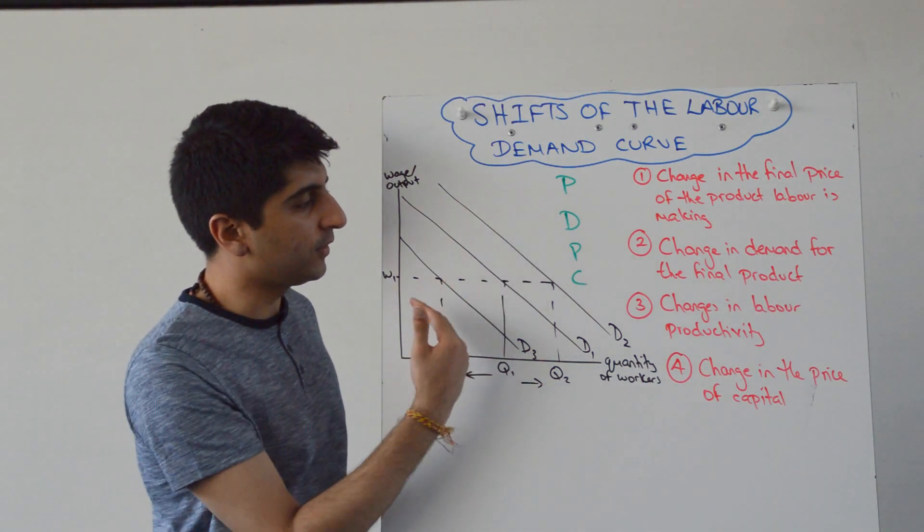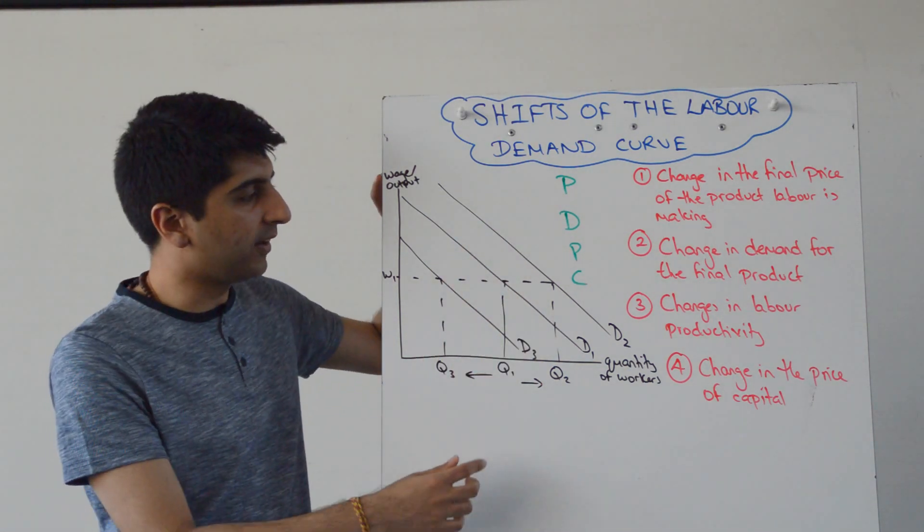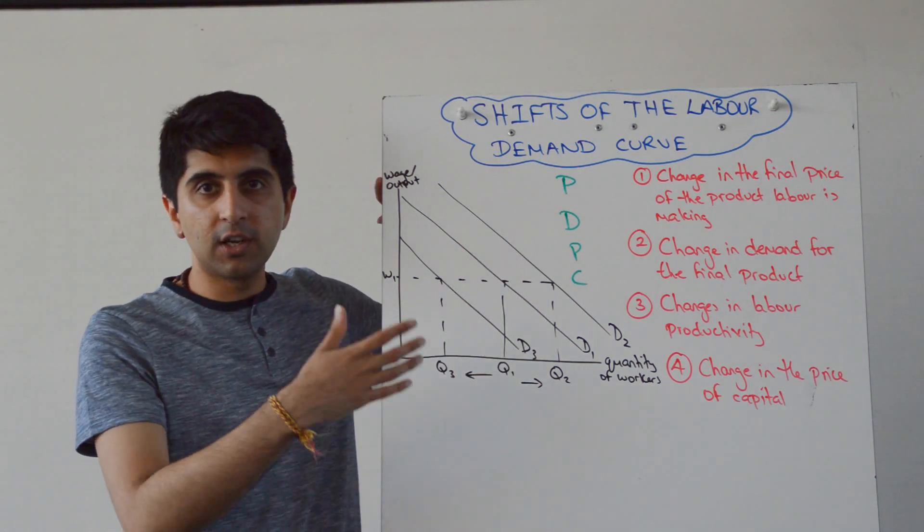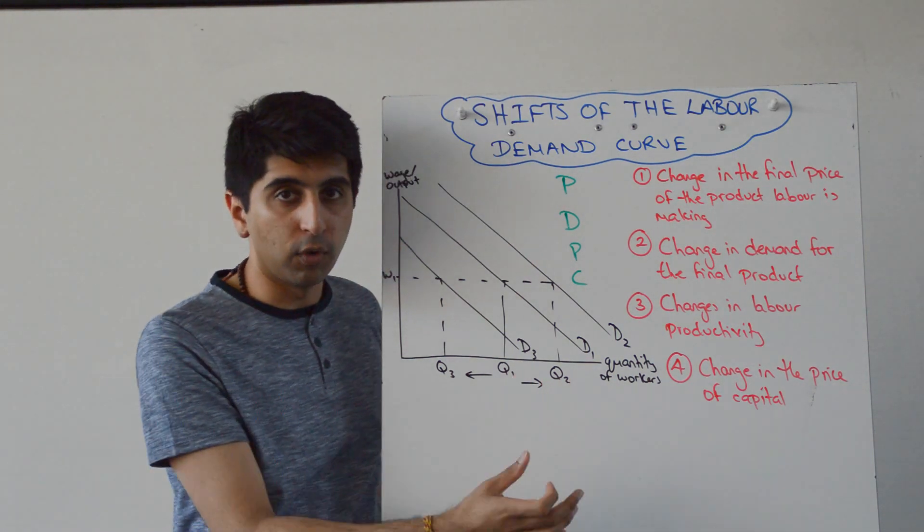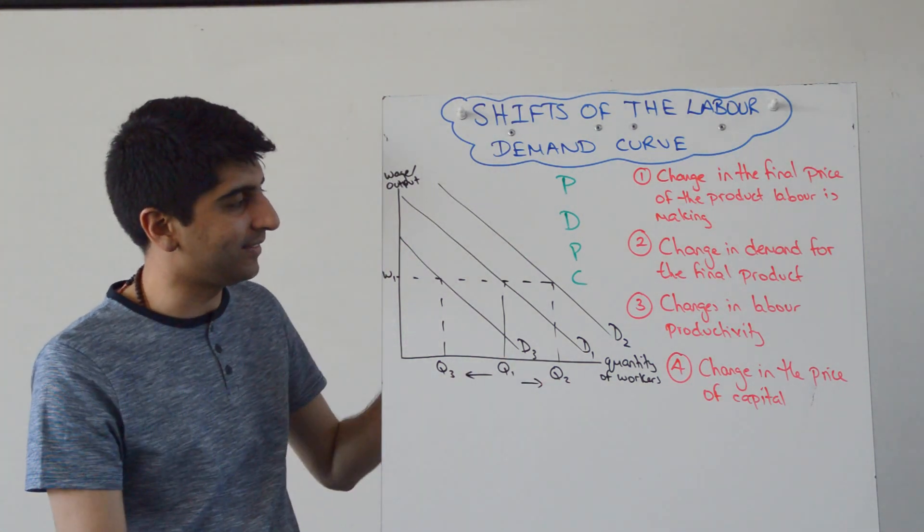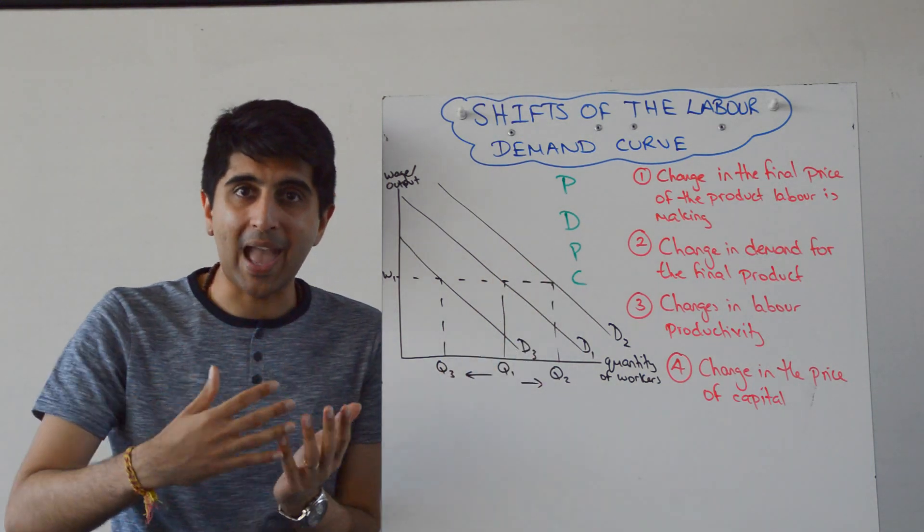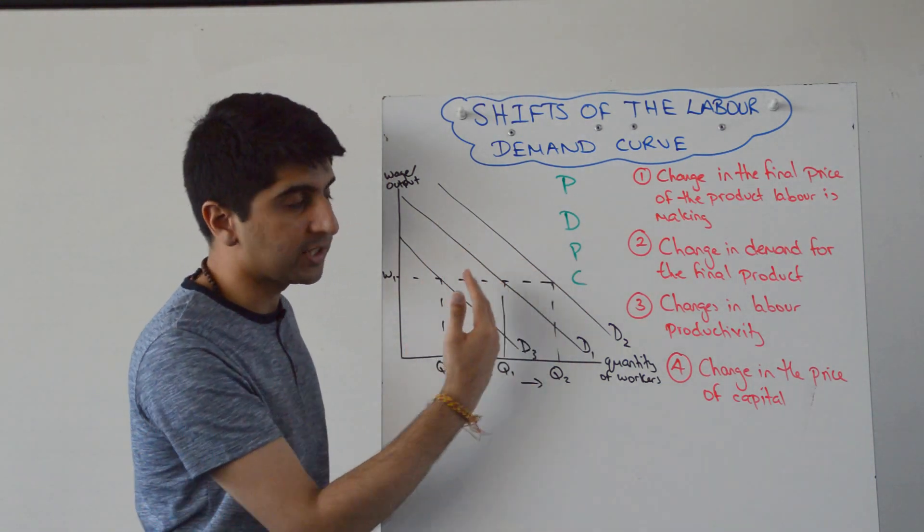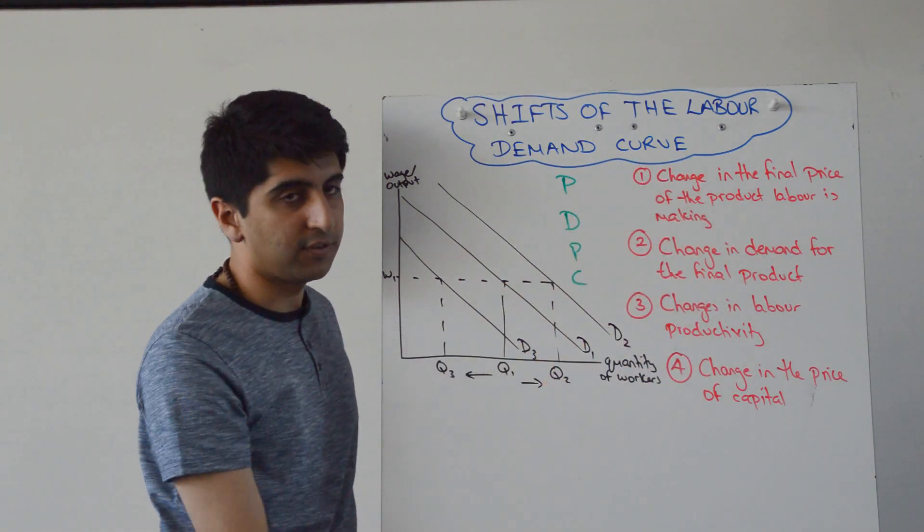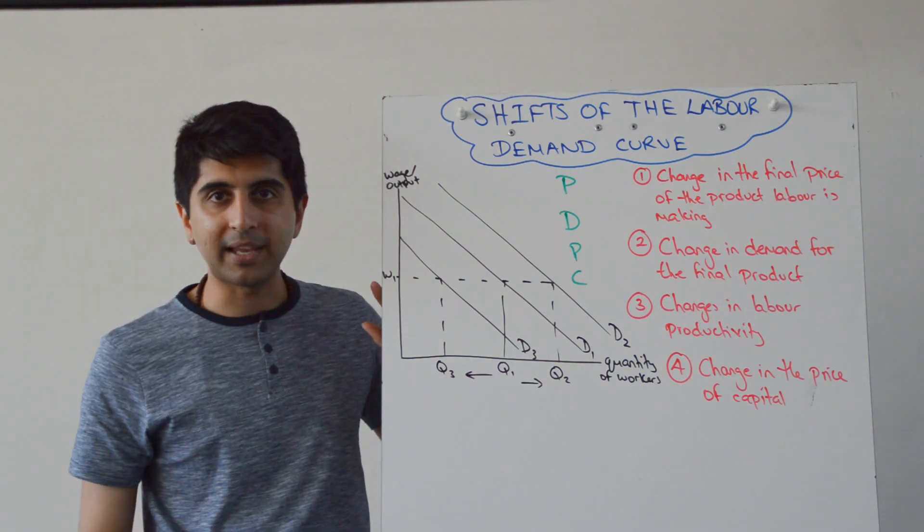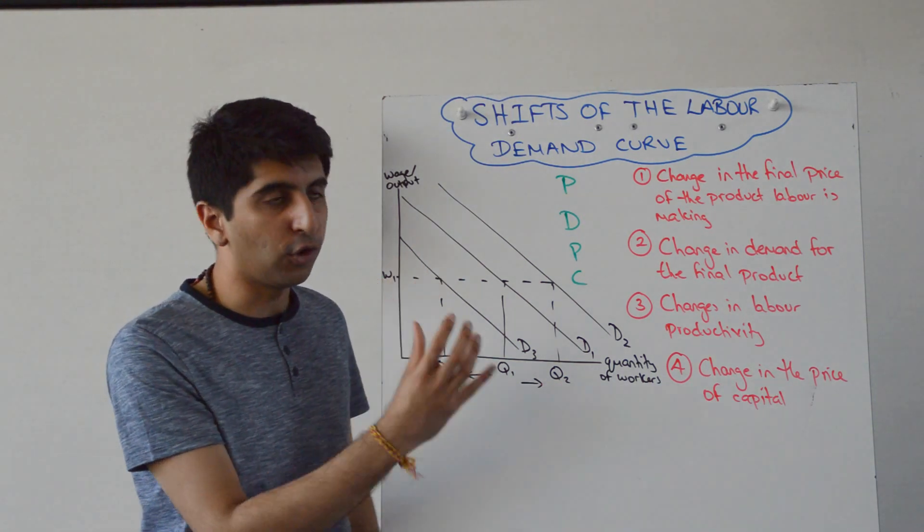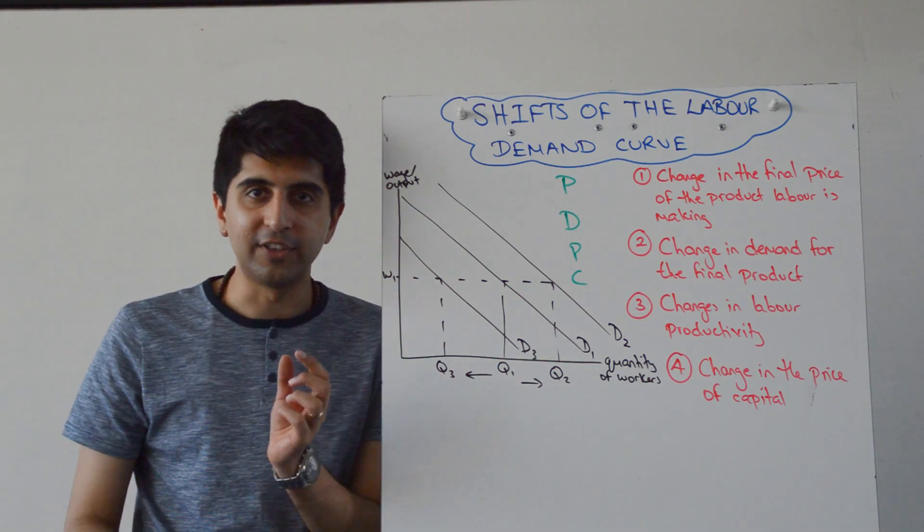And the effects you can see on a diagram here. We're in the labour market, so we have wage or output on the y-axis, we have quantity of workers on the x-axis. And you can see here that the demand curve, basically the MRP curve, will shift to the right or to the left if these shifters take place. And we have an effect on quantity of workers irrespective of the wage. So these are non-wage shifters of the demand curve for labour.